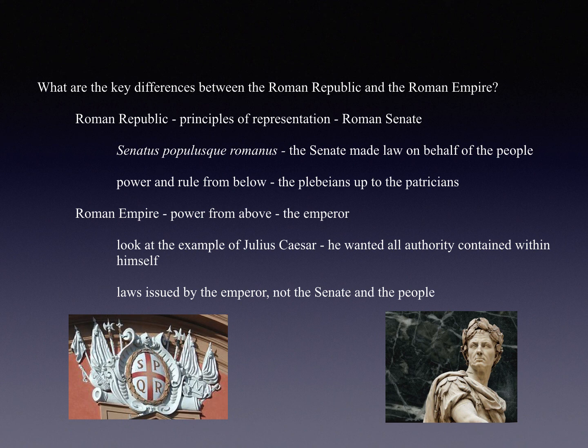Senatus Populusque Romanus translated to mean: 'in the name of the Senate and the people of Rome.' What that meant was that the Senate made law, but it only made law on behalf of the Roman people — you could say the power came from below. The people ruled from the plebeians up through the patricians; the people ruled through the Senate.